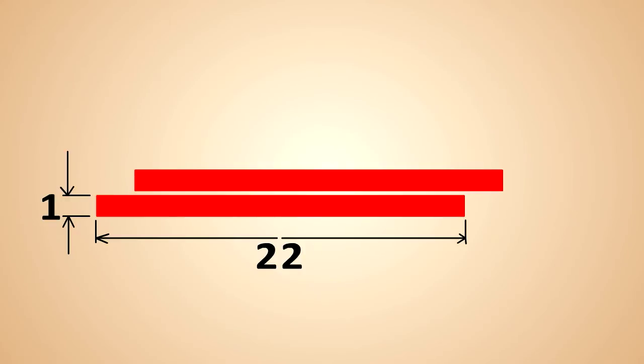If we move the two-dimensional rectangle through the third dimension, we can measure that movement and calculate the volume: length times width times the distance moved. What if we only use one of the original dimensions? Can we get volume? Length times distance moved? Nope, that's just area. Width times distance moved? Nope, that's just area.